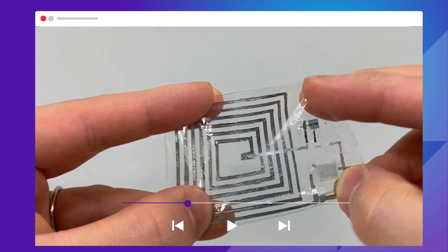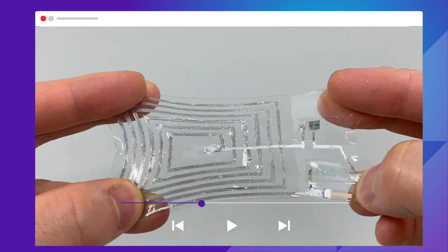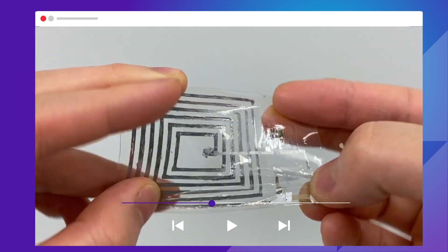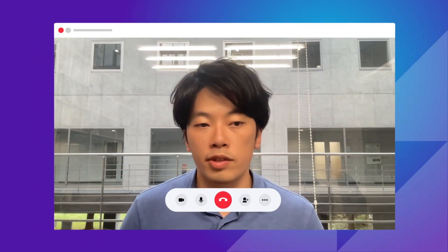For realizing stretchable electronic devices, we have to have a material which has very good electronic properties and mechanical softness. And in order to achieve that, there are several strategies.